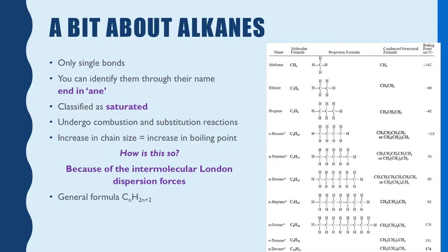Alkanes are also classified as saturated hydrocarbons. This will probably make a little more sense later on, but if you think about it, these are — there are as many hydrogens as possible because they are singly bonded. Once you add a double bond in there, you lose a hydrogen. I'll explain a little later when we look at the next ones.